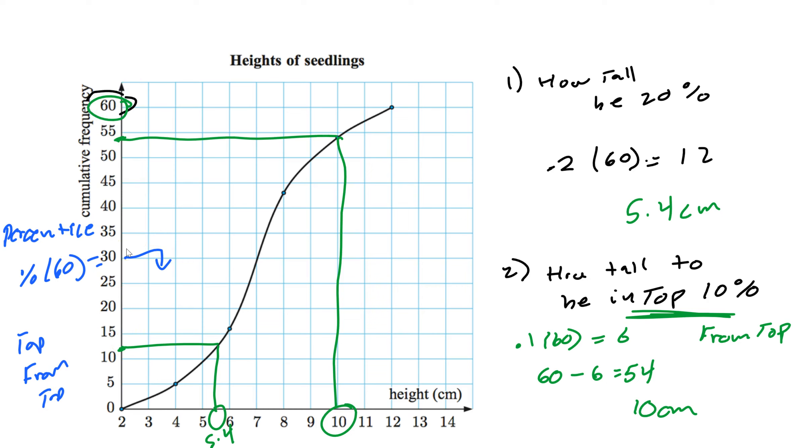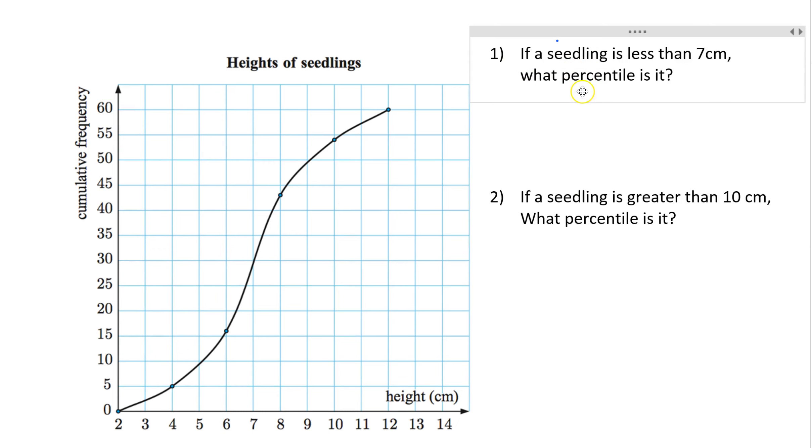Now let's go the other way. What if it gives me the height and I've got to figure out the percentile? Let me clear the board again. I just learned how to insert text into my file. Well, anyway, let's do this example here. If a seedling is less than 7 centimeters, what percentile is it? So here's the key thing about this. It says less than. So that's important. Less than 7 centimeters. So what we're going to do is, now they give us centimeters. So we're going to start down here. So 7. Now remember the rule, you always use the graph. So you have to go up and across.